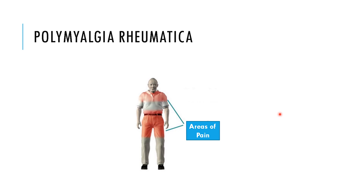Next in general muscle impairment is polymyalgia rheumatica. In this condition, there is pain around the shoulders and hip joint, especially in the morning. There is stiffness and pain around the neck, shoulder, upper arm, and hips, which may cause difficulty in getting up from bed or raising the arms above shoulder height. 'Poly' means many, 'myalgia' means muscle pain, and 'rheumatica' refers to the joints.